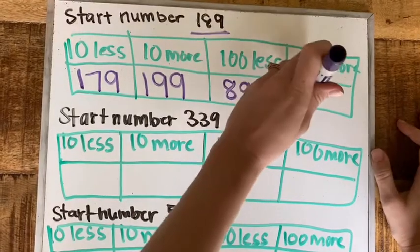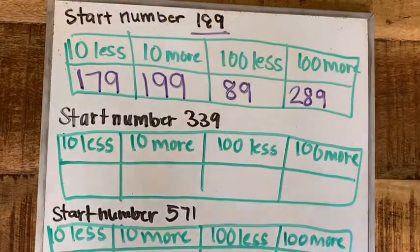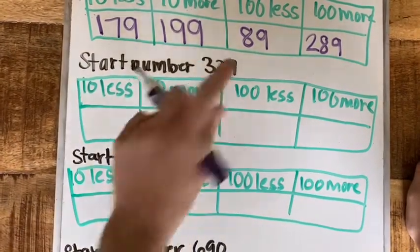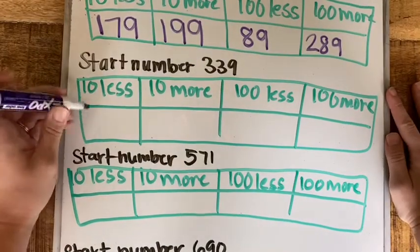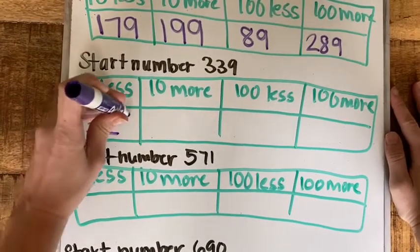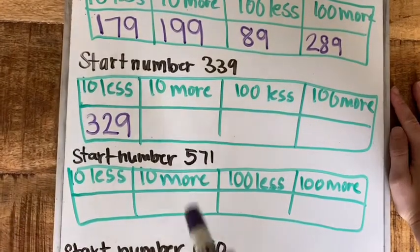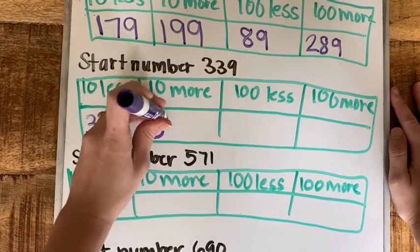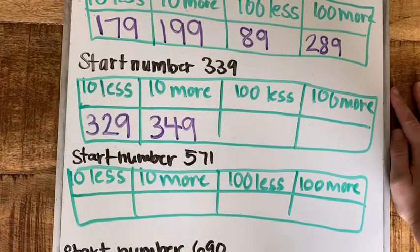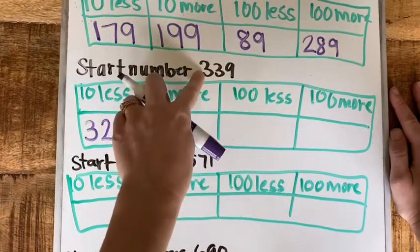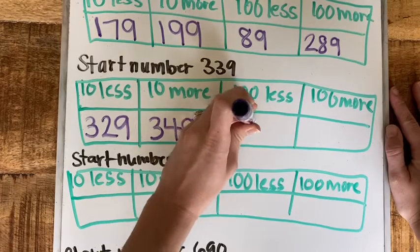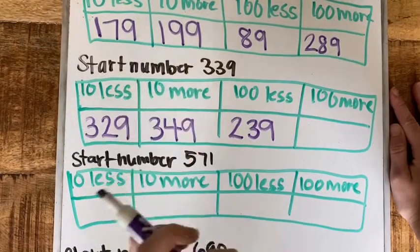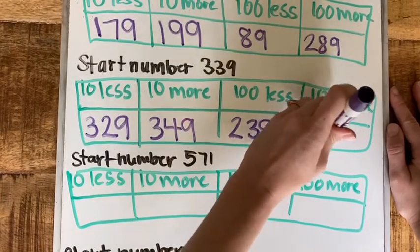So the next number 339, we're gonna take away a 10 from that tens place, there's three tens, we're gonna take one away so we'll have two tens, our hundreds and ones don't change. Ten more, 339, 349, we're adding one more to the tens place. Now 100 less, we have three groups of a hundred so now we're only going to have two, 239. We have three groups, we're going to add another group of a hundred, four hundred thirty nine.